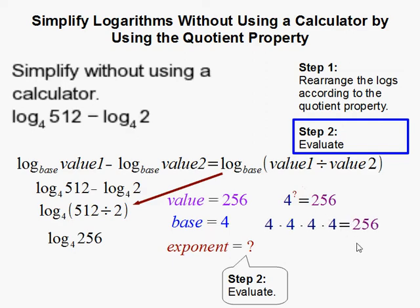It's not 4 squared, that would be 16. It's not 4 to the third, that'd be 64. But 64 times 4 is 256, so the answer is 4. That completes our problem.